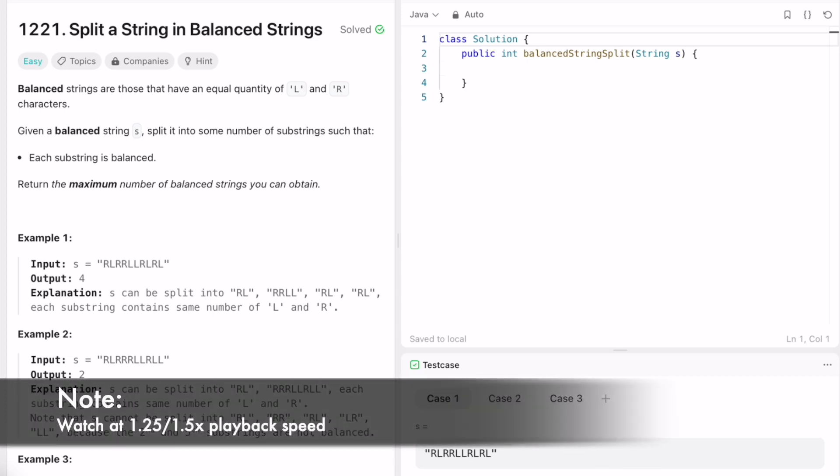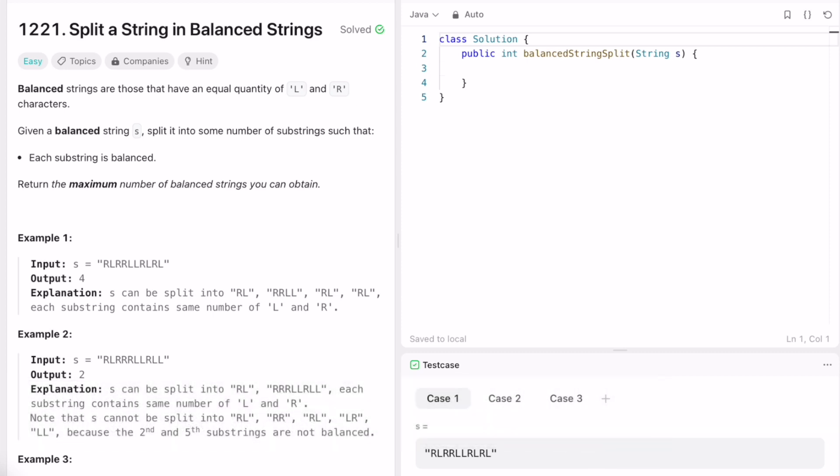Hey guys, welcome to a new video. In today's video we're going to look at a LeetCode problem. The problem's name is Split a String in Balanced Strings. In this question we are given a string s, and the definition of a balanced string is a string which contains equal quantities of R and L. Our task is to return the maximum number of balanced strings you can obtain from the original string.